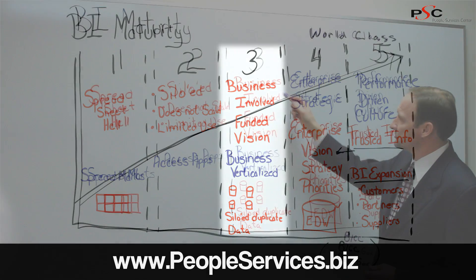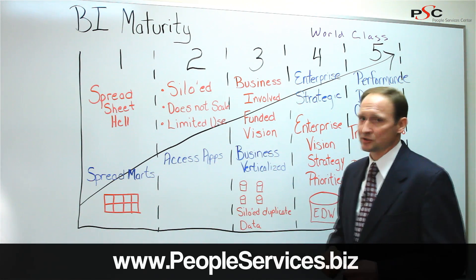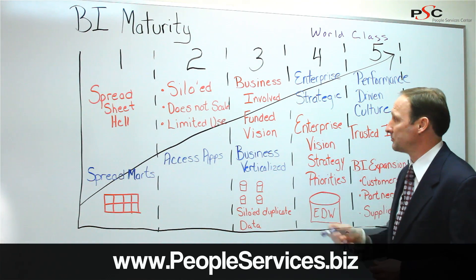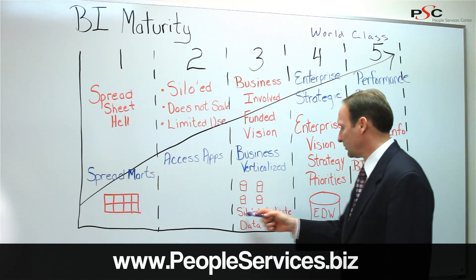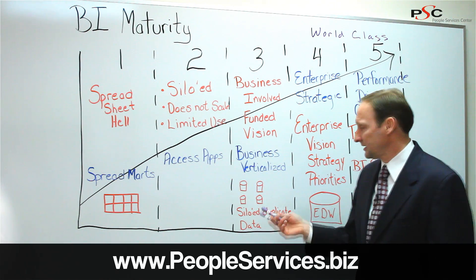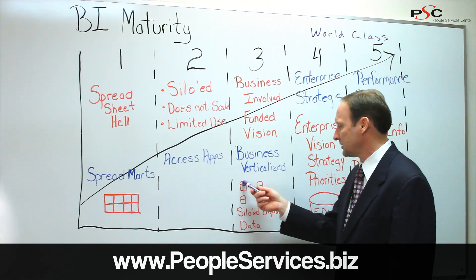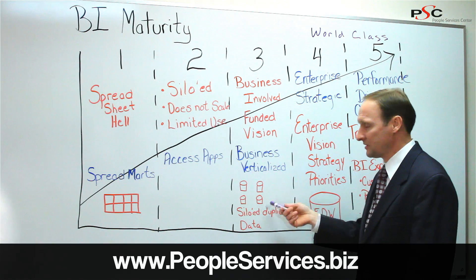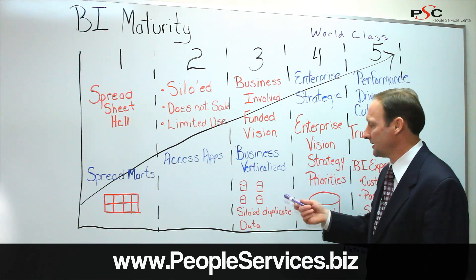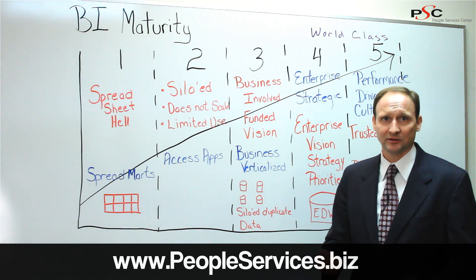In phase three, the business gets more involved in designing a solution that meets their needs. They get involved to fund it, provide a better vision, and set priorities. The challenge is that not only are data structures siloed, but we end up having to duplicate data. For example, customer information must be replicated across ten different data marts, leading to data quality issues when departments report information that doesn't tie out.